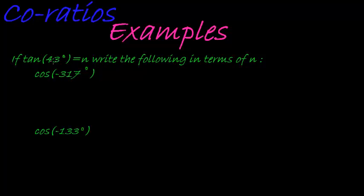So they give us that tan 43 is equal to n. And all you need to know is that tan of any angle is equal to opposite over adjacent. So if I have opposite over adjacent equal to n, I can assume the opposite is n and the adjacent is 1.